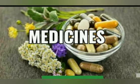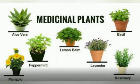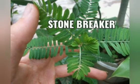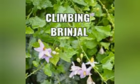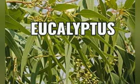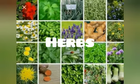Coconut oil is used both for cooking and as hair oil. Medicines. Plants also give us medicines. We get medicines from many plants such as stone breaker, climbing brinjan, eucalyptus and many other herbs which we see around us.